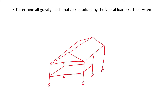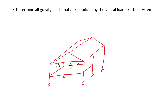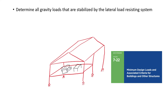The next step is to determine all gravity loads that are stabilized by the lateral load resisting system. This can include self-weight, rain load, snow load, dead load, and/or live load — or any load in the direction of gravity. Remember that if loads are not available for the structure you are designing, you can always refer to ASCE 7 to determine the minimum design loads.